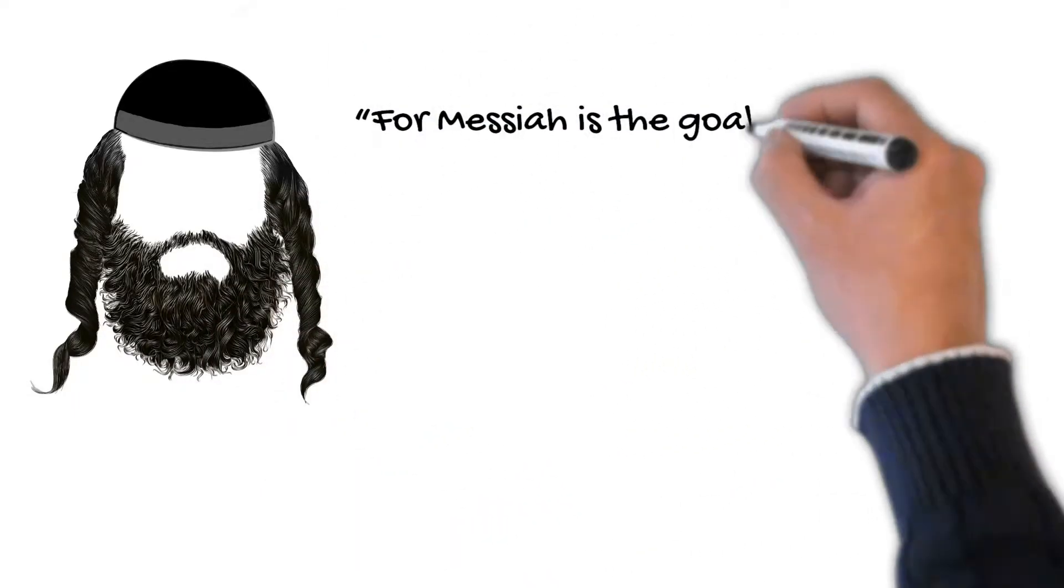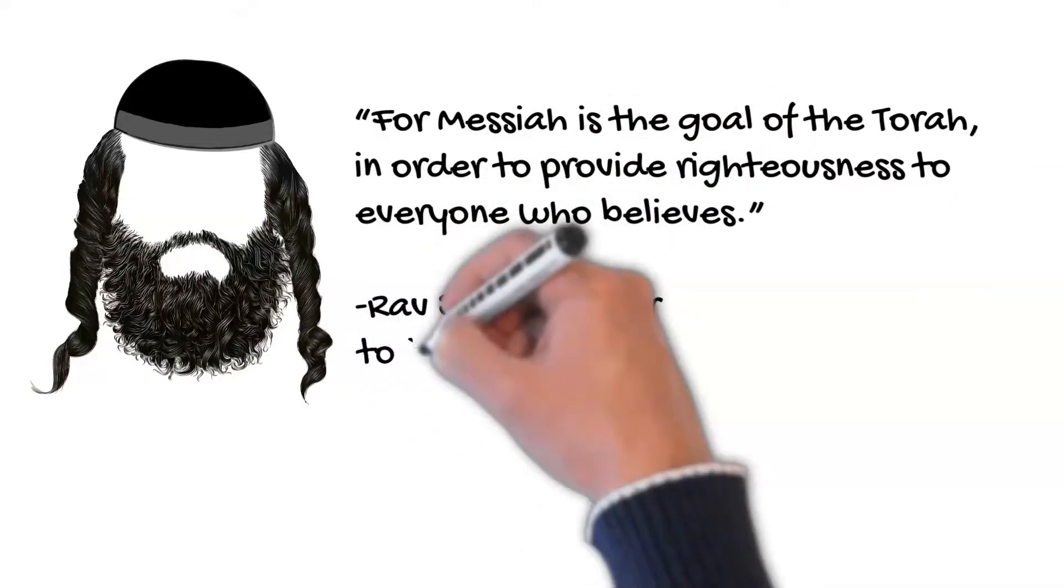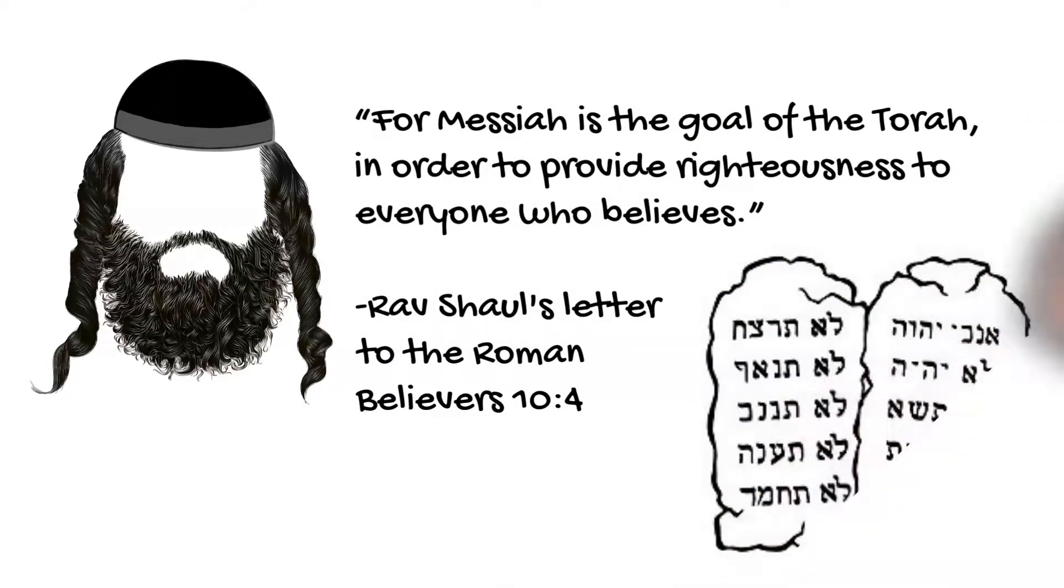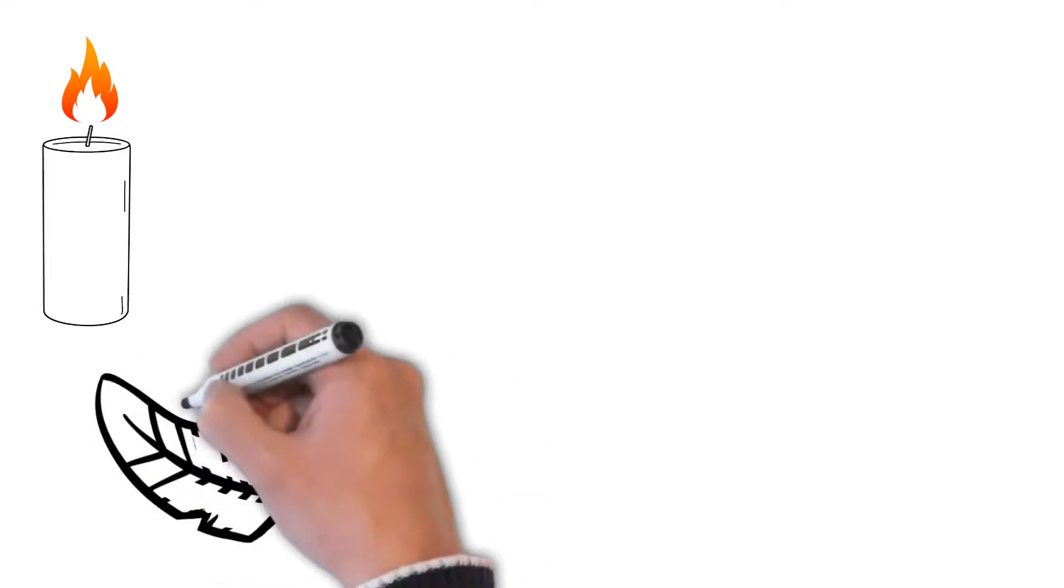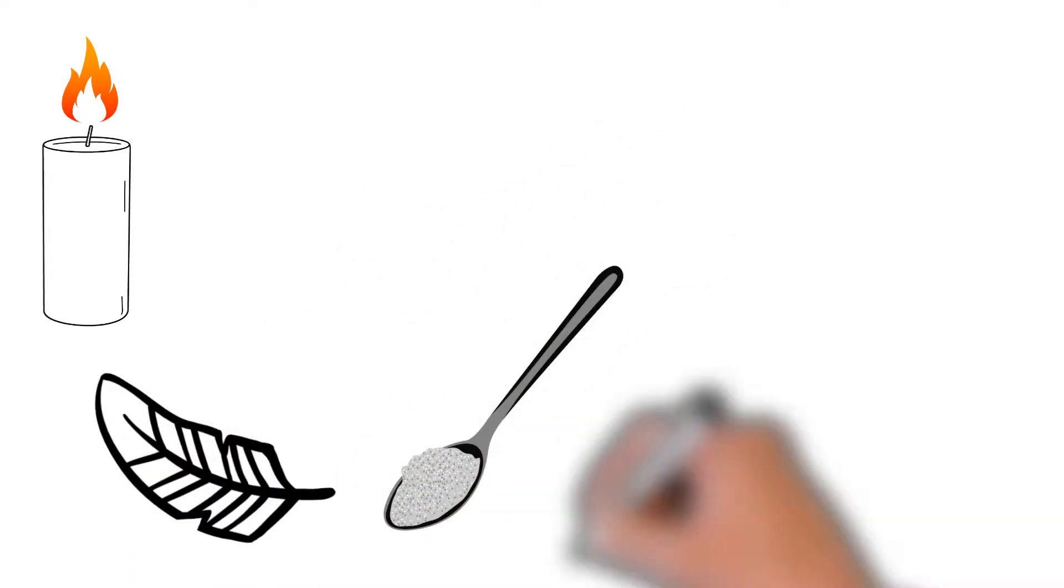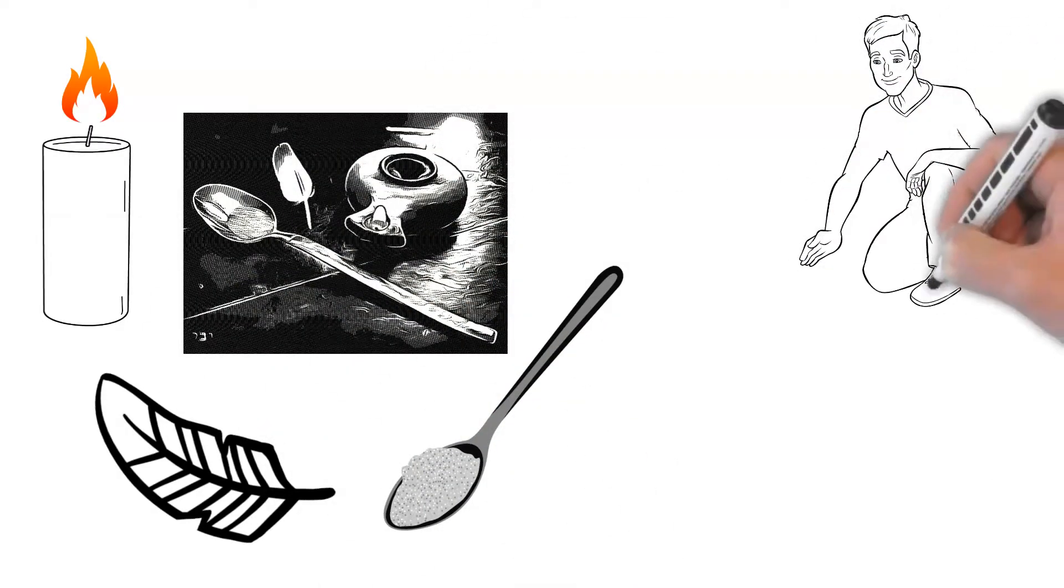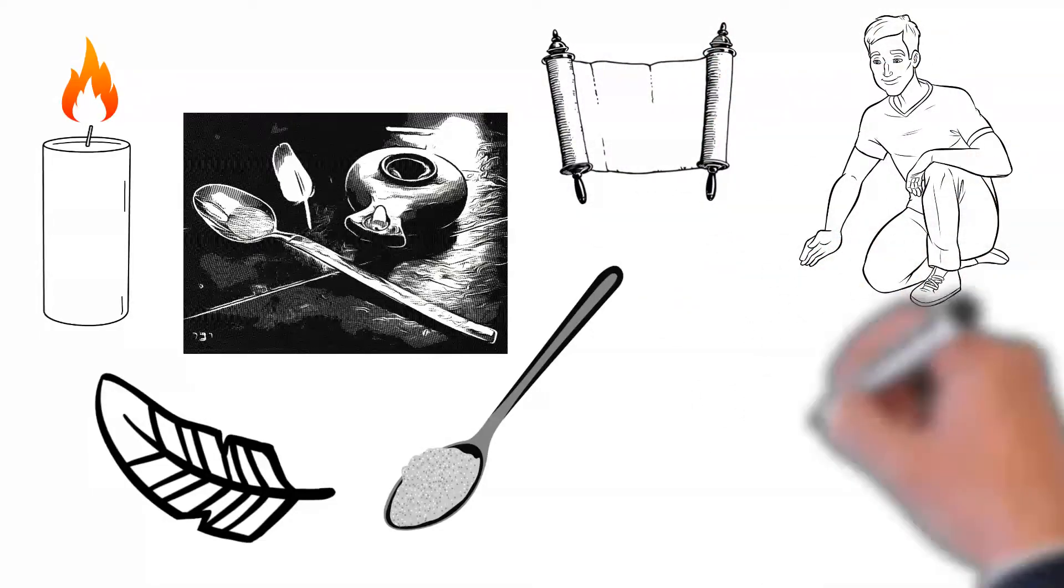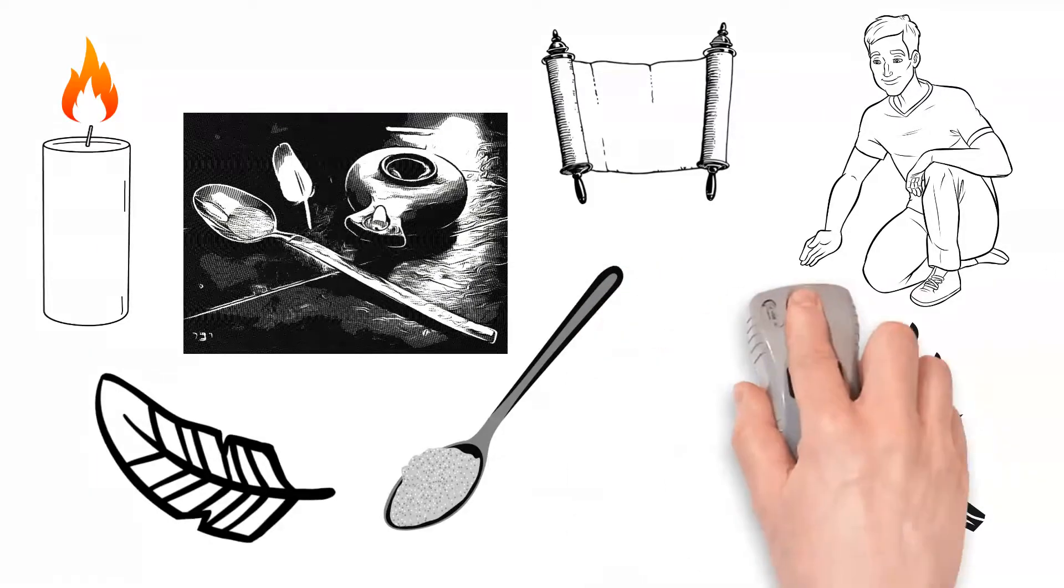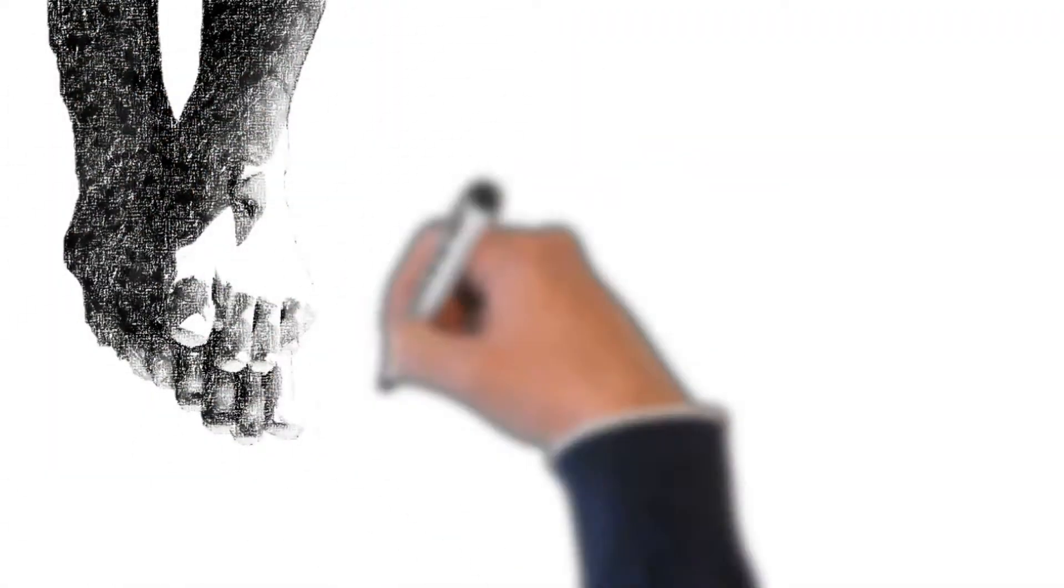For Messiah is the Goal of the Torah, in order to provide righteousness to everyone who believes. Therefore, as Messiah followers, we continue to practice these rhythms of God using physical symbols in order to glimpse the eternal, unseen kingdom of God within the temporary, symbolic elements of Torah practice. This reminds us of the fact that the kingdom of God is both now and yet future, and is firmly established in us through the redeeming work of the King Messiah, Yeshua.